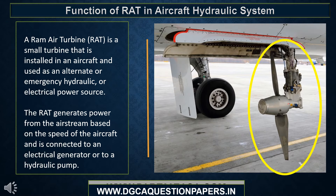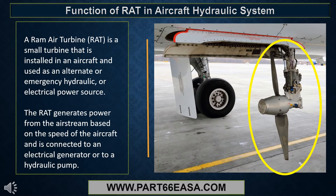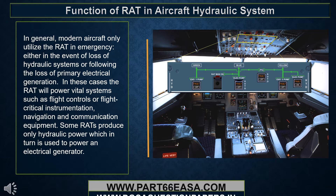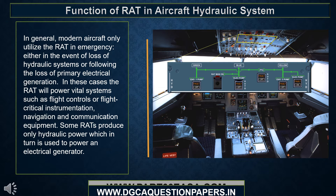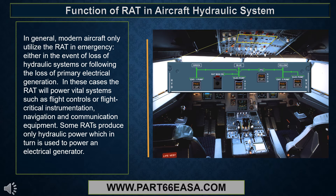A RAM air turbine (RAT) is a small turbine installed in an aircraft and used as an alternate or emergency hydraulic or electrical power source. The RAT generates power from the air stream based on the speed of the aircraft and is connected to an electrical generator or to a hydraulic pump. Modern aircraft only utilize the RAT in emergency, either in the event of loss of hydraulic systems or following the loss of primary electrical generation. In these cases the RAT will power vital systems such as flight controls or flight critical instrumentation, navigation, and communication equipment.